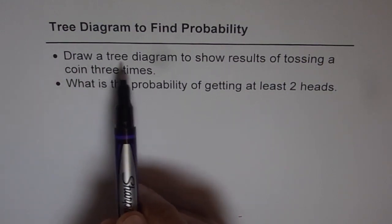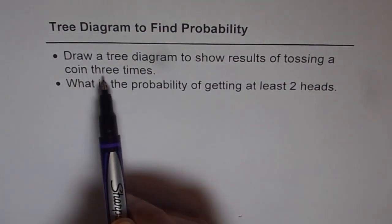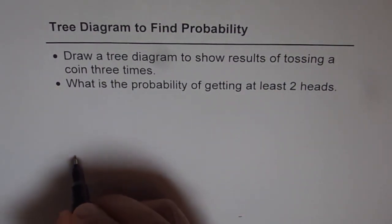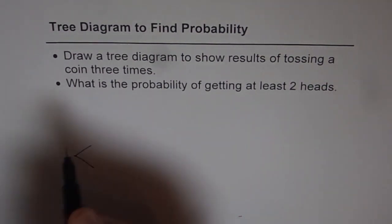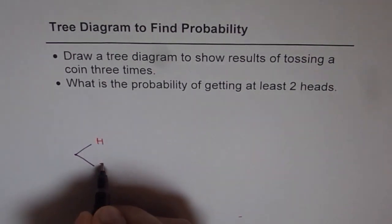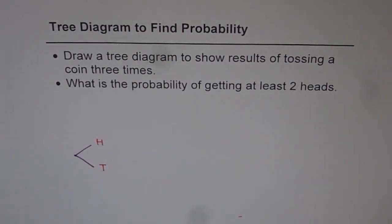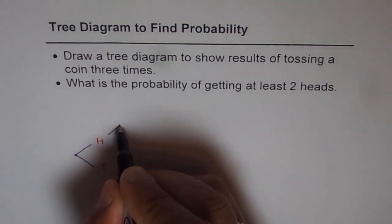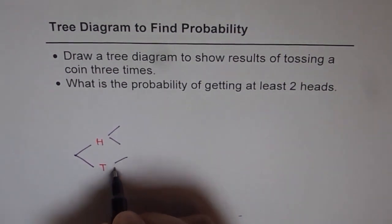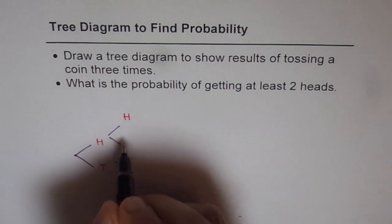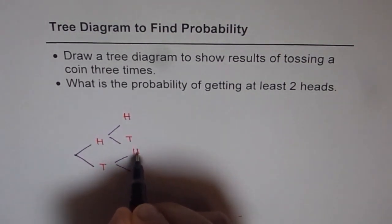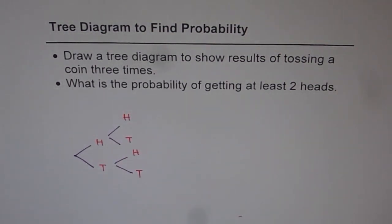First, draw a tree diagram to show results of tossing a coin three times. When you toss a coin, you can get either heads or tails. So let's write both these options — head or tail. That is the first toss. In the next toss, you can again get head or tail for both conditions. So you can again get head or tail, head or tail. That is the second toss.